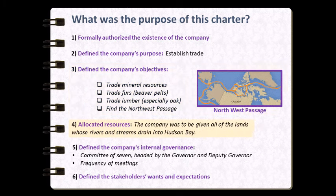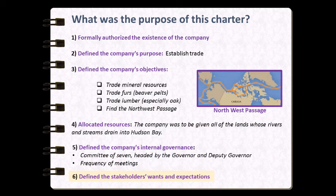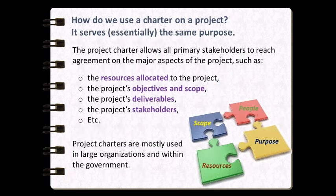The charter also specified the resources that were at the disposal of this new company. They were given all the lands whose water flowed into Hudson's Bay. At the time, it was unknown just how much land this would turn out to be. The charter went on to describe the internal governance of the company — what meetings would have to occur and what internal processes would have to be followed. The charter also described who the stakeholders were for the company and what their wants and expectations were. As we can see by looking over this list, the charter went a long way to describe the framework from which the company would operate.